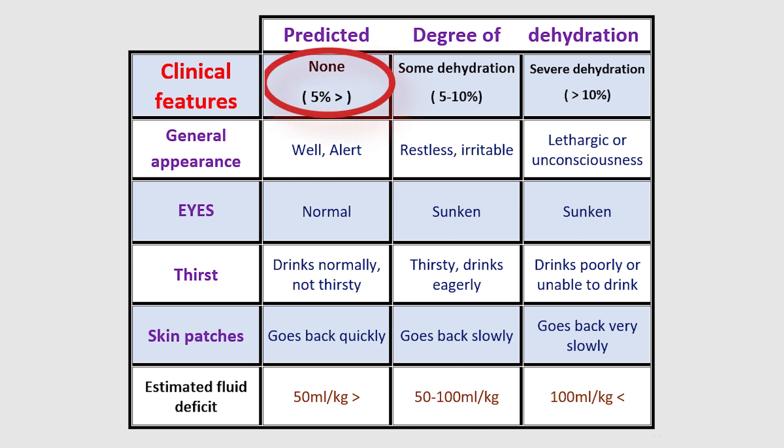In children with less than 5% dehydration, the estimated fluid deficit is less than 50 ml per kg. In mild to moderate dehydration, 50 to 100. And in severe dehydration, more than 100 ml per kg is needed to replenish the fluid loss.